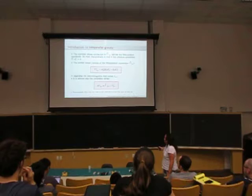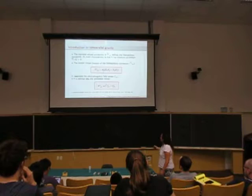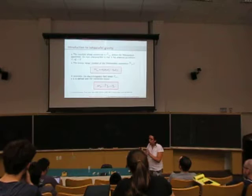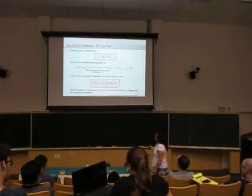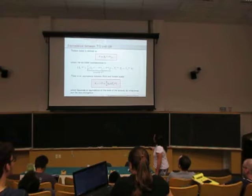We can define also the contortion, which is the difference between the Weitzenböck connection and the Levi-Civita connection. This Levi-Civita connection is what you know from general relativity, is a combination of derivatives, first order derivatives of the metric. So, we can now define the torsion scalar, which is the T of the f of T, which is given by this expression, which is quadratic in the torsion tensor.